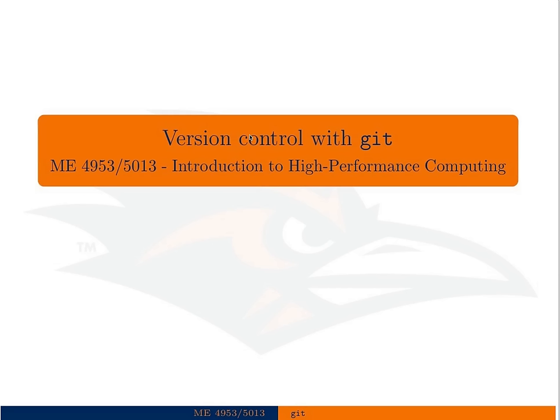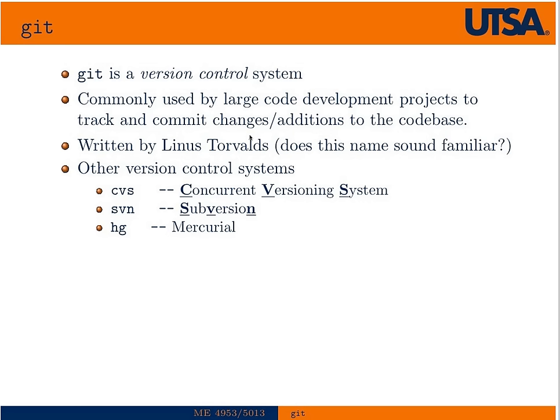In this lecture we're going to talk about version control, specifically with the version control tool Git. Git is a version control system. Version control is commonly used by large code development projects to track, commit, and maintain changes to their codebase.